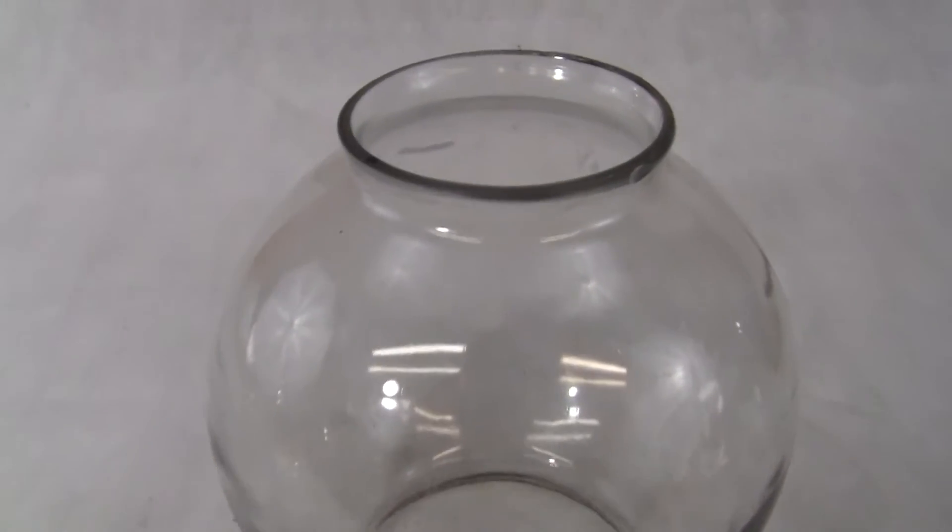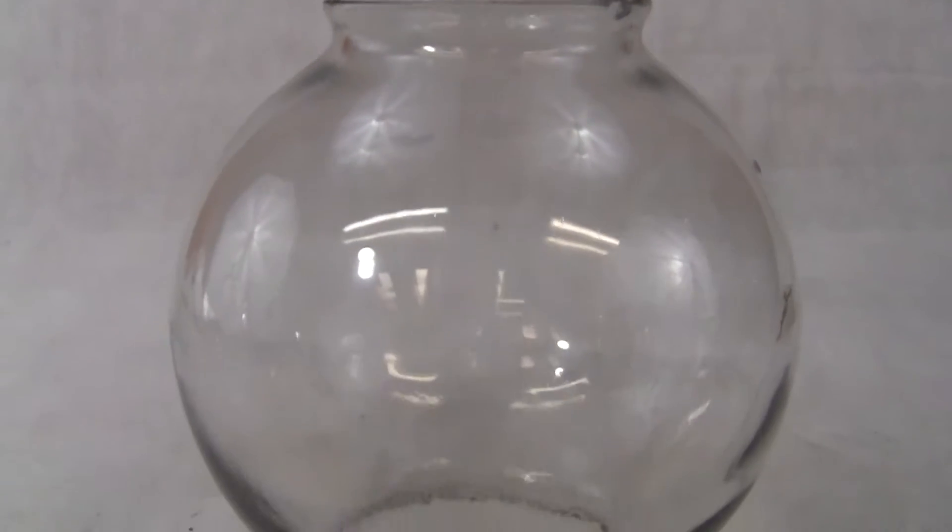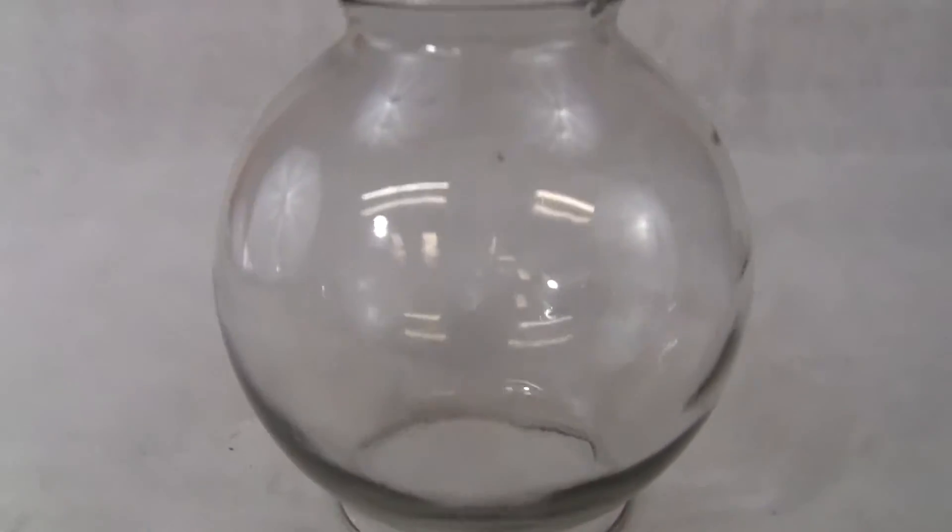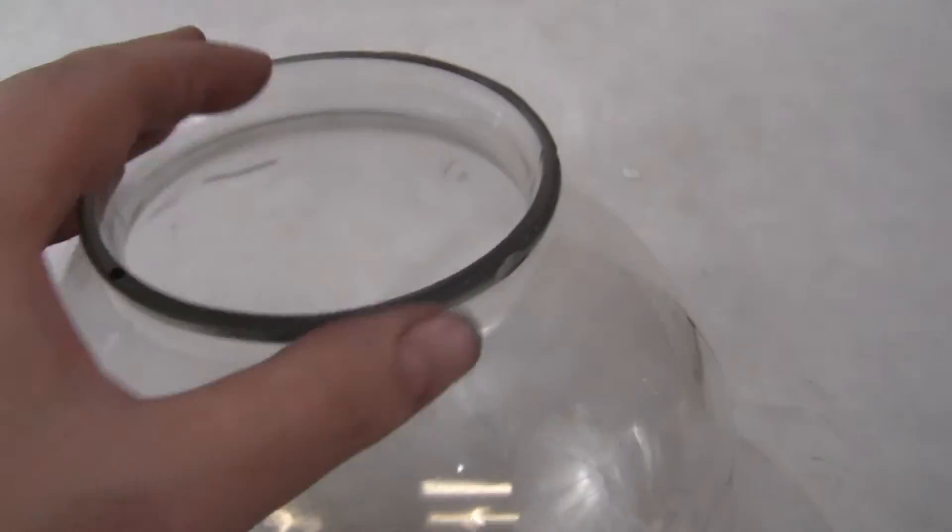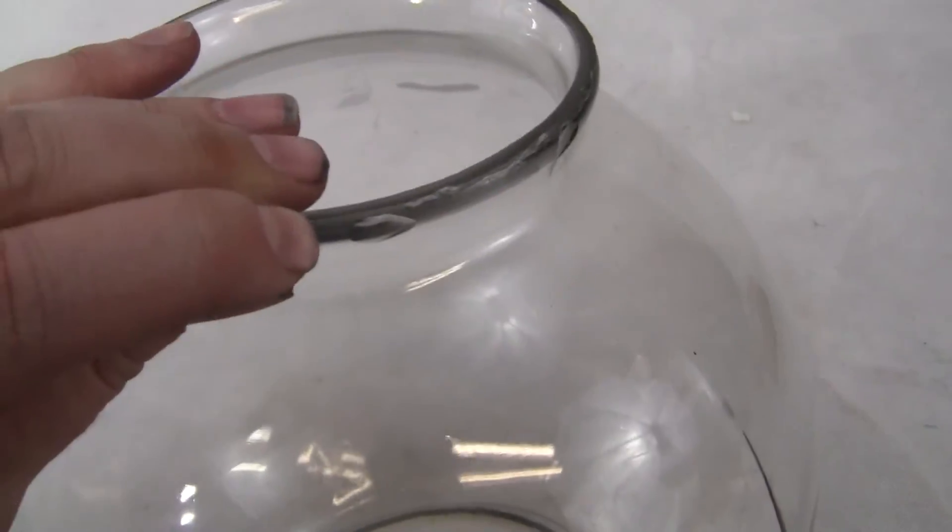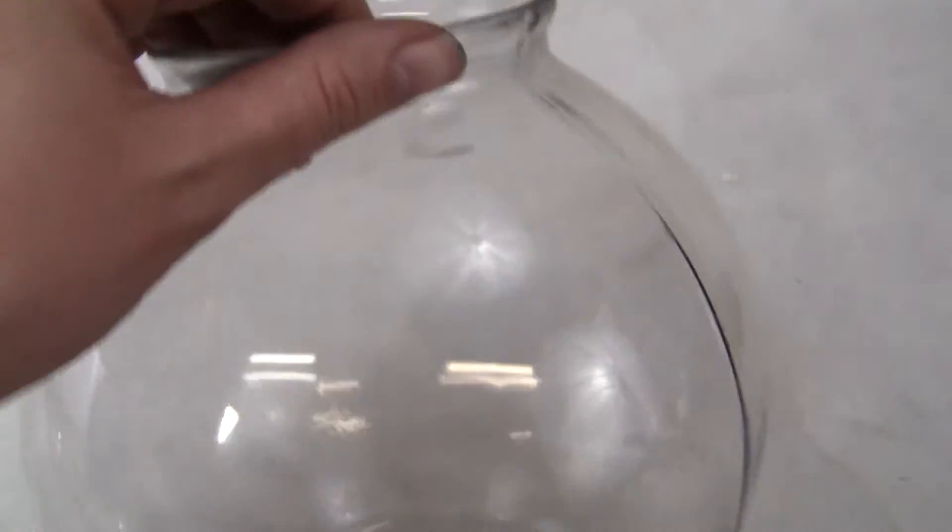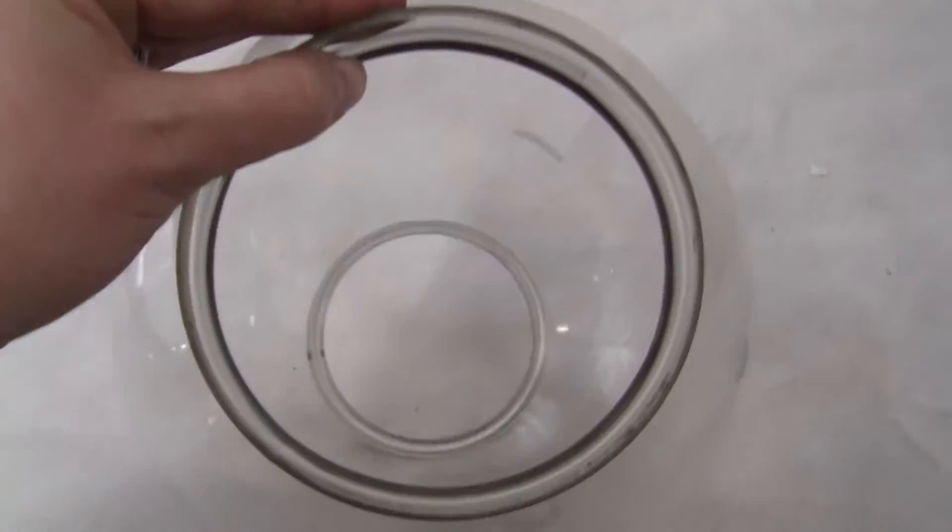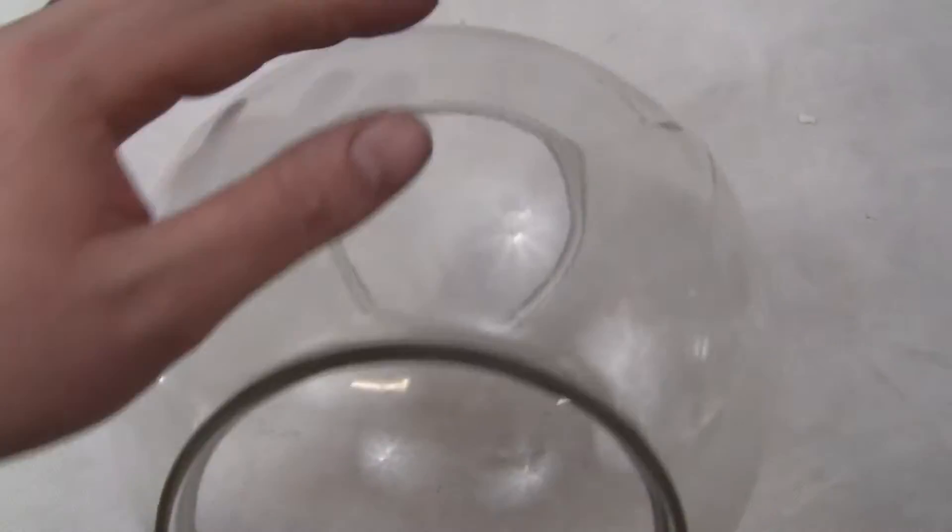Up for auction is an original Adley EZ Globe for the Adley EZ machines. Excellent condition. No major chips, just a little chip on the outside of the ring right here. The bottom looks perfect. No cracks.